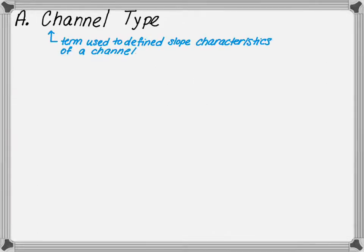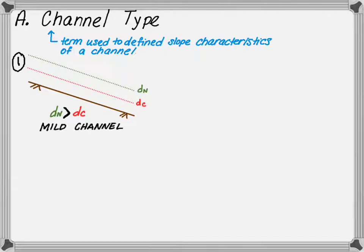Channel type is a term used to define the slope characteristics of a channel. If you are given a channel with a critical depth less than the normal depth as shown, this is defined as a mild channel.